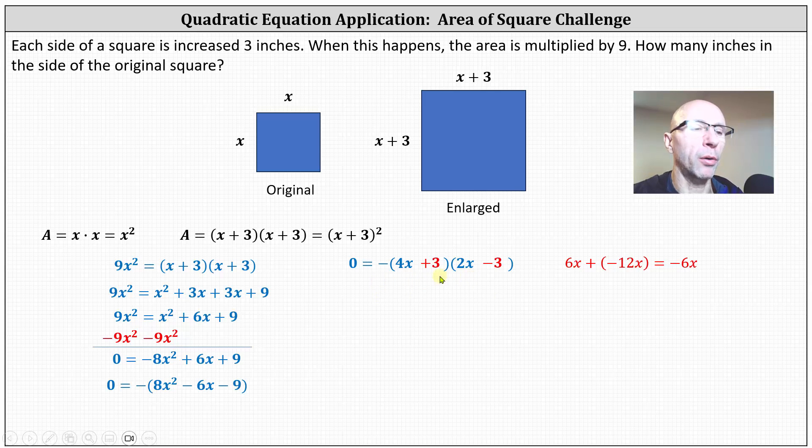The product on the right is equal to zero when four x plus three is equal to zero, or two x minus three is equal to zero. And now we solve these two equations for x. To solve four x plus three equals zero for x, we subtract three and divide both sides by four, which gives us x equals negative three fourths. And to solve two x minus three equals zero, we add three to both sides and divide by two, giving us x equals three halves.